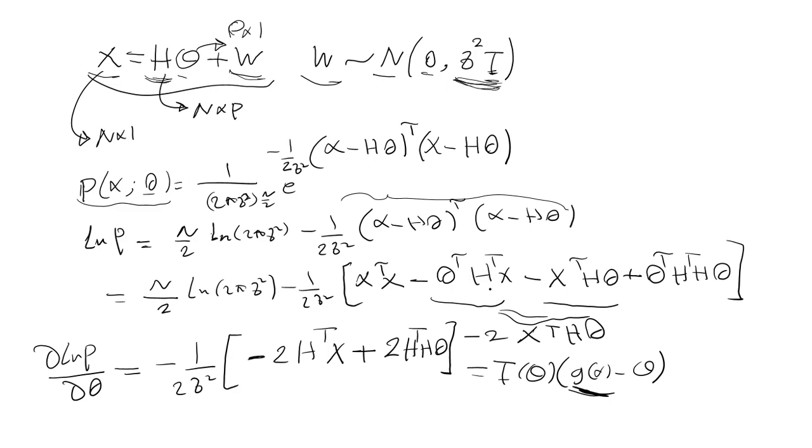After this we can find the gradient of log likelihood with respect to the vector of parameters. The derivative of this term is zero, and here this term is zero. This term is minus two X transpose theta.